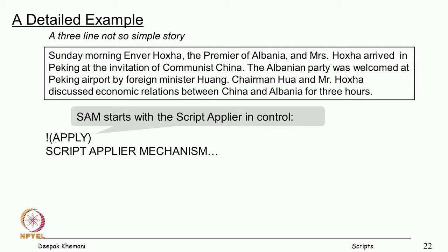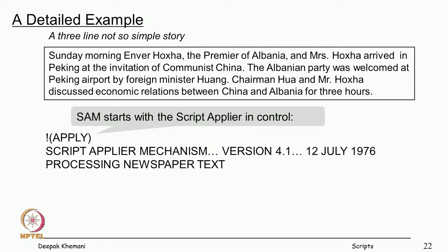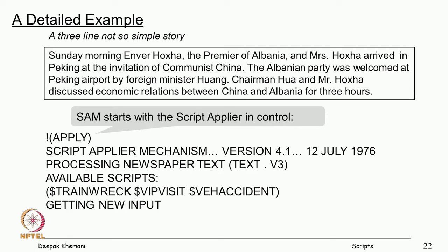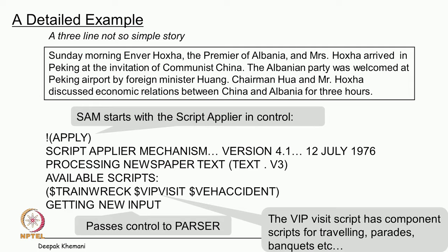It starts with the script applier in control. The program is called apply, and this trace is dated 12 July 1976. At the moment when this program was invoked it had three scripts in its memory: the train wreck script, the VIP visit script, and the vehicle accident script. Since these are premiers of an institute coming to visit, we are going to see an example of the VIP visit script. The VIP script has components for traveling and may have other things like parades and banquets.